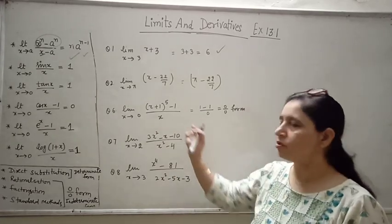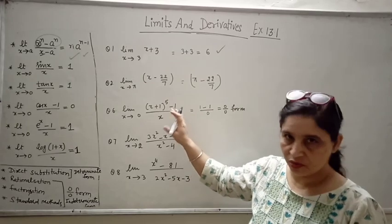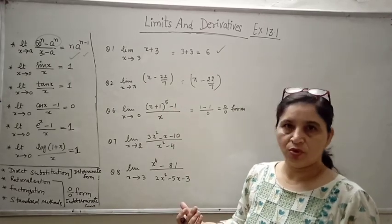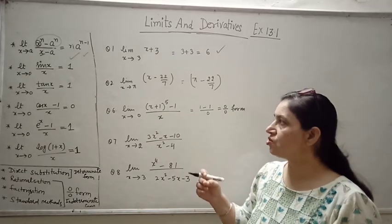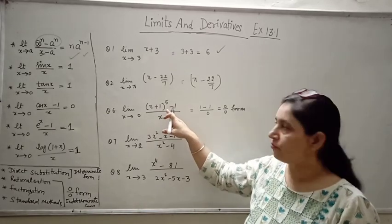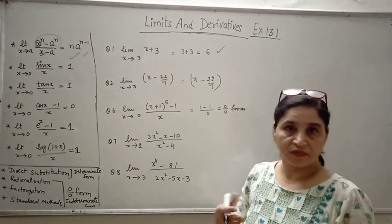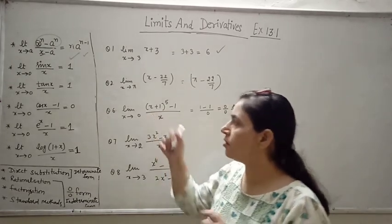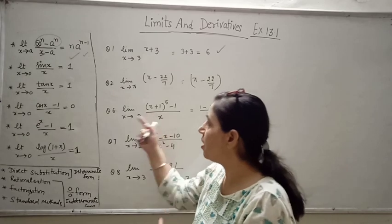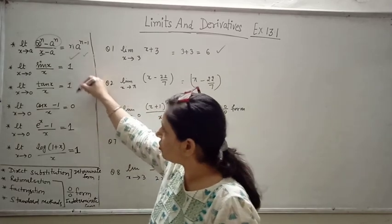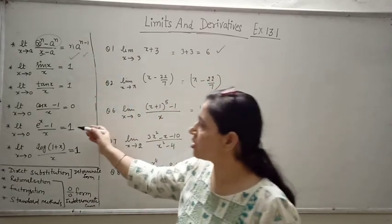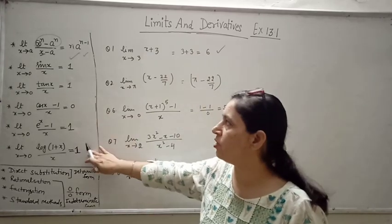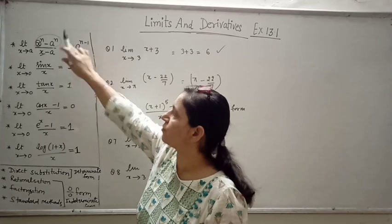You can see this is not a question with any square root, so rationalization is not needed. Can you factorize this power 5? Probably not directly. This is not a trigonometric function, not an exponential function, not a logarithmic function. So we need to look at what's left.